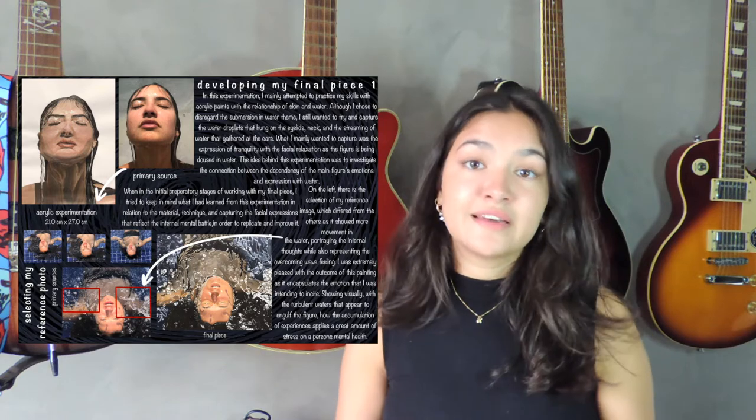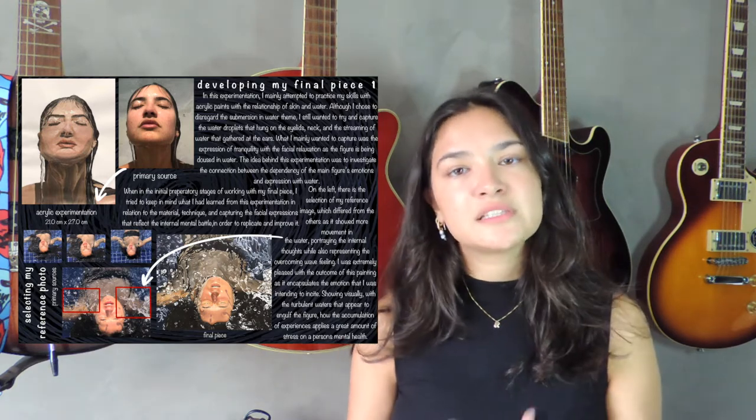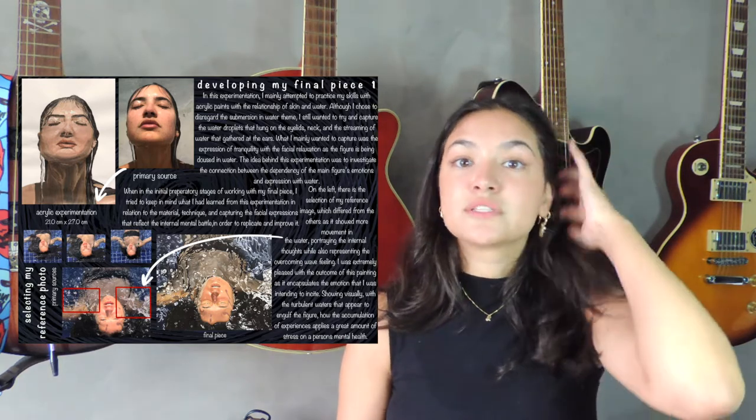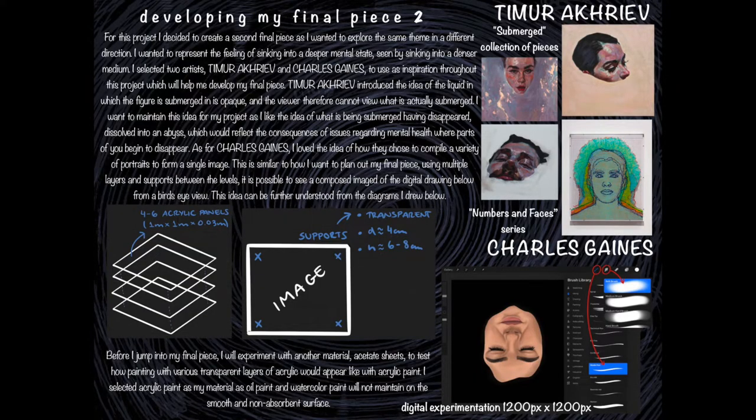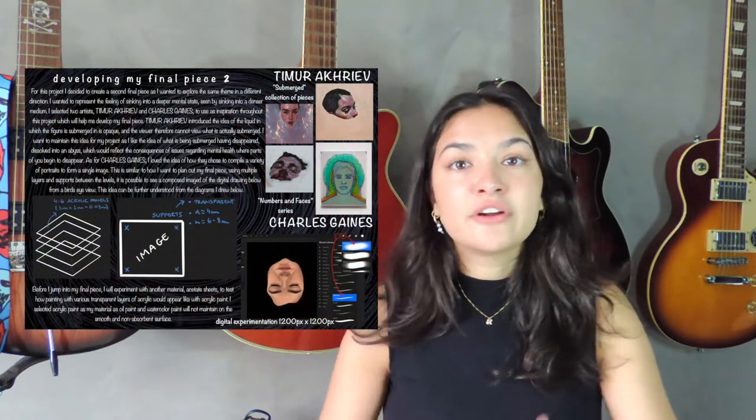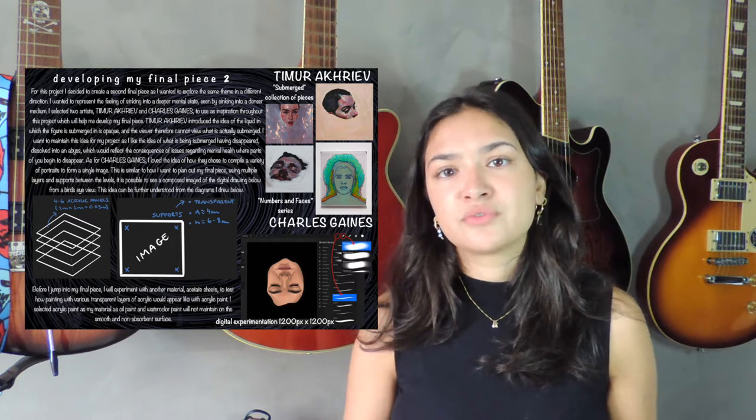I wrote 'developing my final piece one' because I continue this project with another final piece — an extension project — and I made it clear to the examiner this was the first final piece but linked to another. For the second final piece, although an extension of the first, I started right into developing it since I already had the initial idea and theme, but needed to explain how I was going to develop it differently. I do not recommend doing many final pieces off the same theme. If you do multiple paintings as one final piece that's fine, but doing three final pieces off one theme would seem like you're milking the same idea, and that might not come off well for the IB.